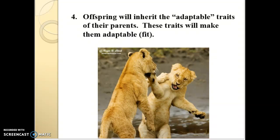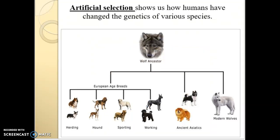Darwin formulated this idea and then asked, what else is out there to show that this can happen? And he looked at artificial selection. Artificial selection is direct evidence of how humans have intentionally changed species. Think about our domesticated dogs — all dogs today trace their origin back to ancestral wolf populations. Humans got in there and started selectively breeding certain wolves, and over the course of an estimated 14,000 to 15,000 years of tinkering, we now have the breeds we have today. They're still all related to each other and to the ancestral wolf population, but we've changed them dramatically.